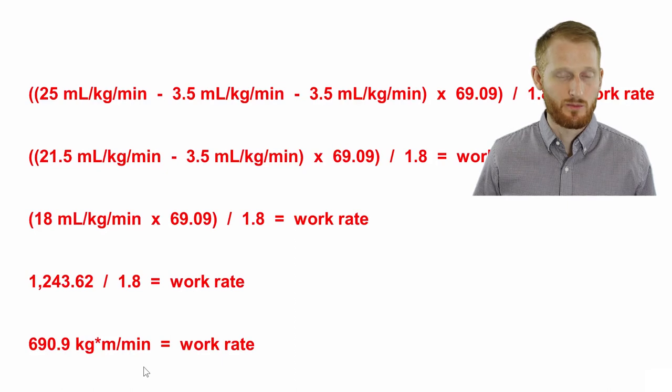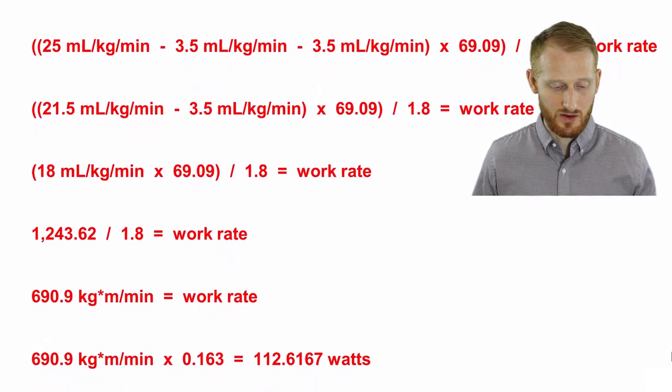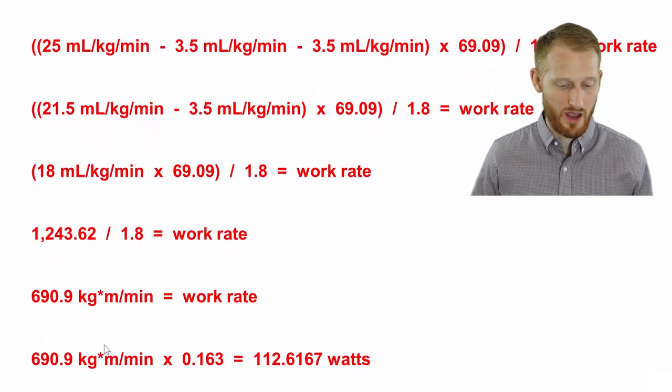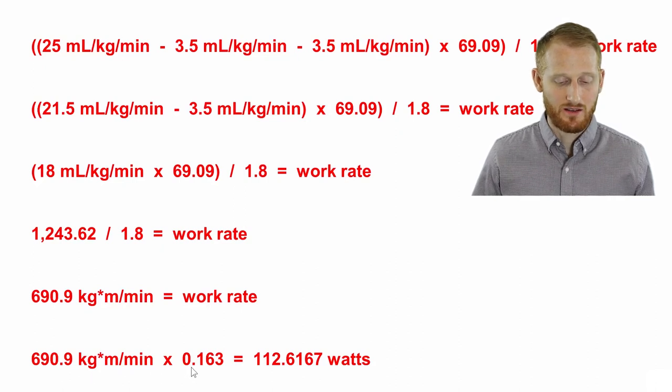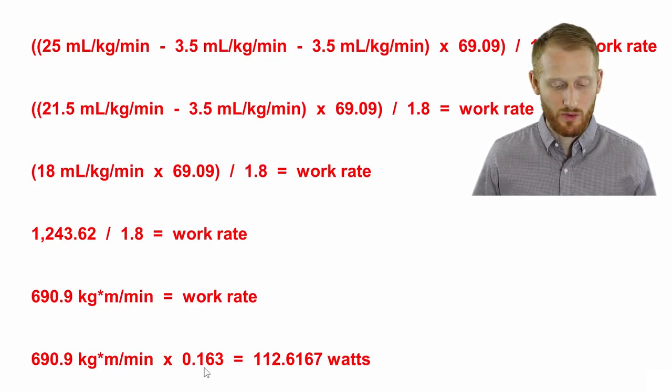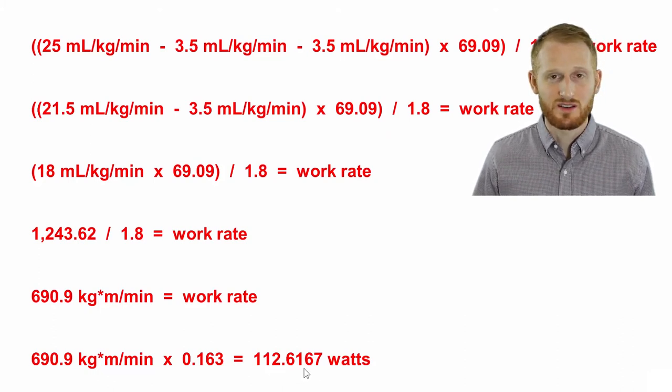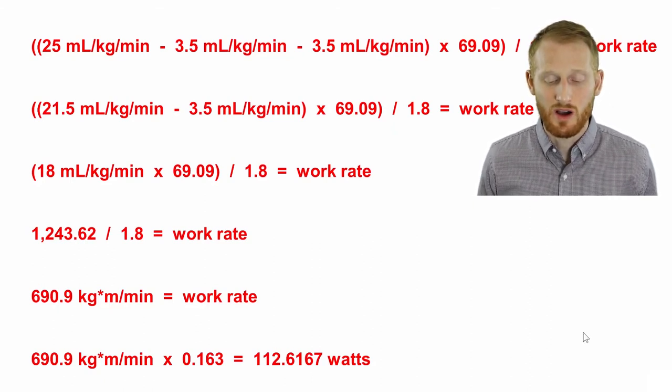Let's convert kg meters per minute to watts. The conversion factor for that is simply to multiply what we have in kg meters per minute, so 690.9, by 0.163, which is the conversion factor for watts, and we're going to end up with 112.6167 watts, which you just round probably to 113 watts.